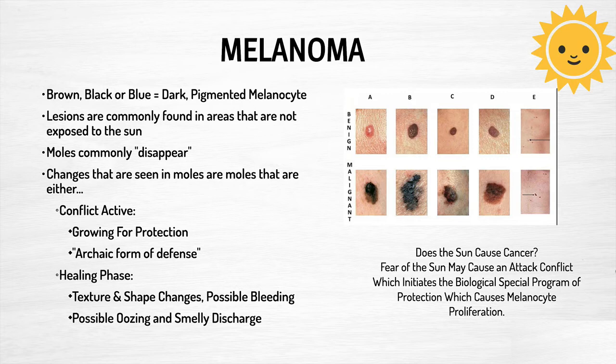The interesting thing is that lesions of melanoma are typically found in areas that aren't exposed to the sun — like underneath bra straps, underneath underwear lines, places that normally aren't exposed to the sun. You'd think it'd be very common on the arms, but mostly they are hidden. Also, many people report that moles pop up, have dark pigmented areas, and then disappear and go away completely. If it's just a random thing, does it just randomly come and randomly go? Is it cancer or not?